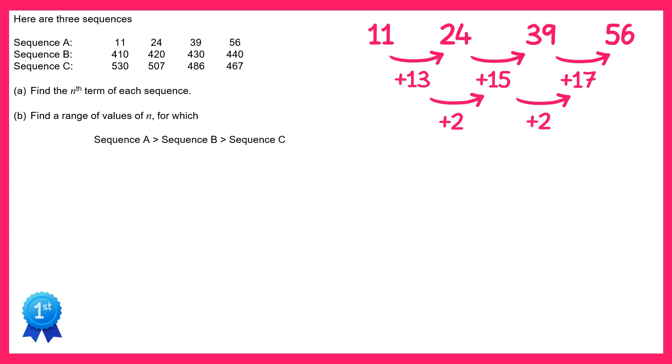If you half this number, you find the coefficient of n squared. So half of 2 is 1, so it's just an n squared sequence. What we do next is write down the sequence and then write down what n squared is underneath that. Now n squared is just a square number, so 1 times 1 is 1, 2 times 2 is 4, 3 times 3 is 9, 4 times 4 is 16, and so on.